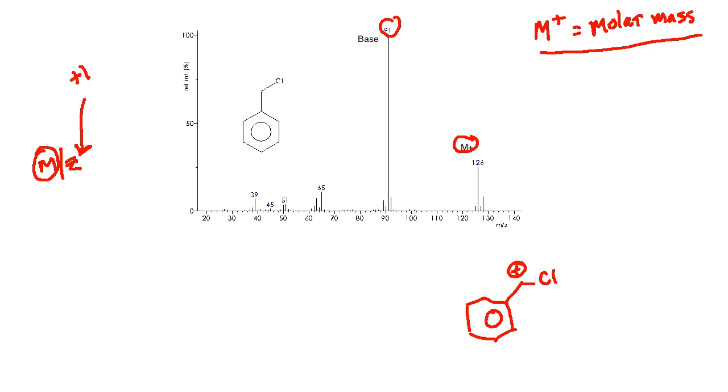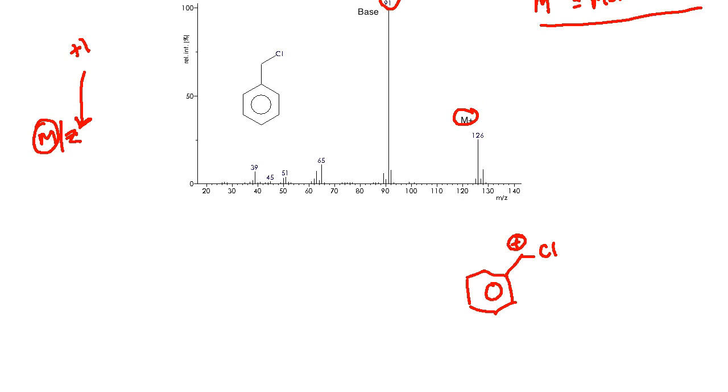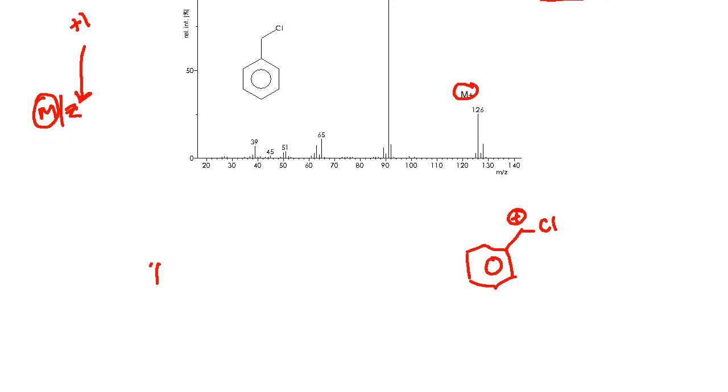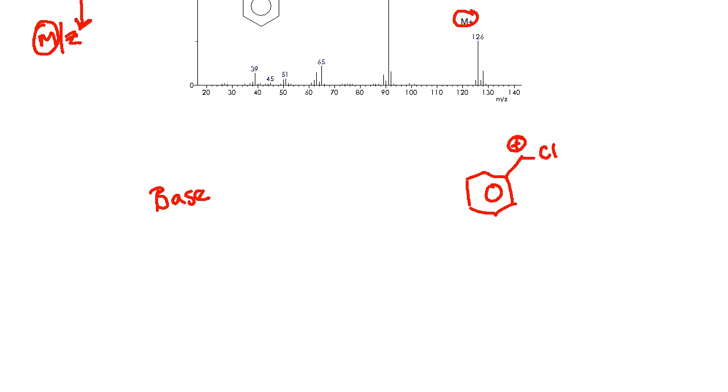That is the M+ and that's going to be the structure itself, because electrons are negligible when they contribute to mass. That is the molar mass. Now what is the base peak? The base peak, which is the tallest peak that you're going to see, is usually the result of the most stable cation that can be formed.